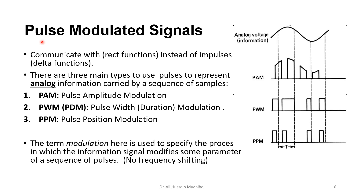The third application for sampled signals is pulse modulated signals. If we have a signal with sampling intervals showing four samples, we would like to represent them using pulses — rectangular functions, not impulses. So instead of delta functions, we use squares. The first option is pulse amplitude modulation: the original square pulse is scaled by the signal amplitude, giving a pulse amplitude modulated signal. The information is carried in the amplitude.